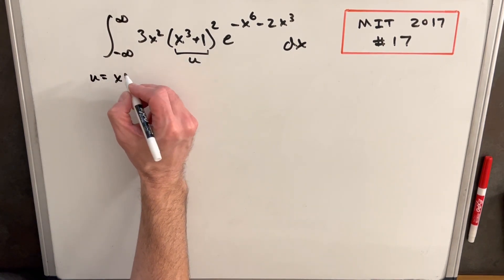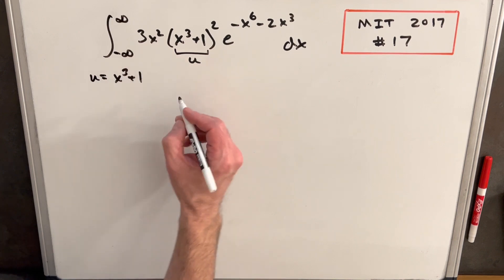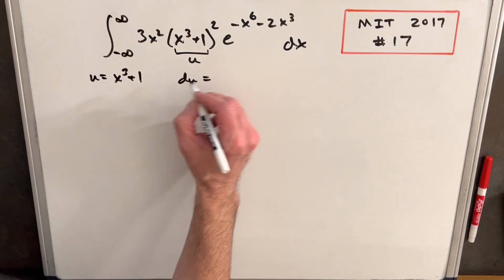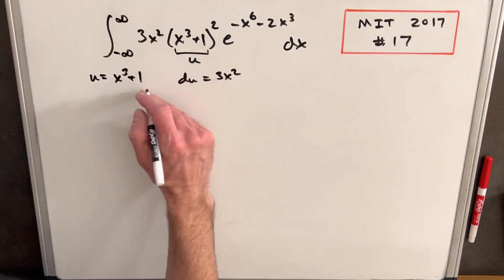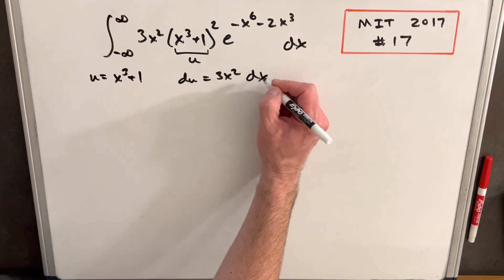So we'll do u equals x cubed plus 1. And then du is just going to be 3x squared, the derivative of 1 is 0, dx.